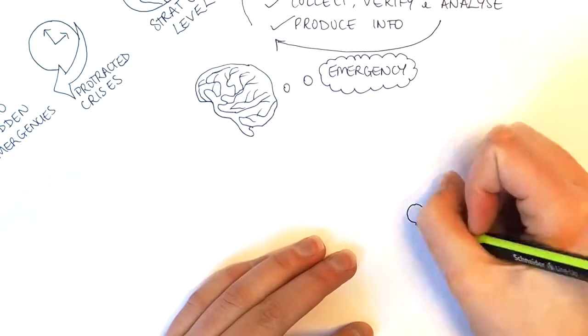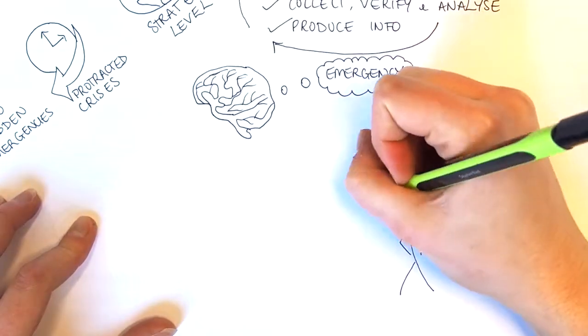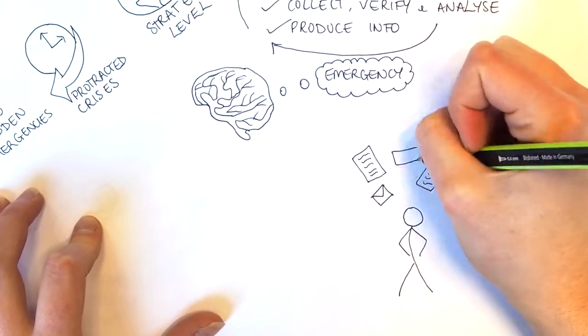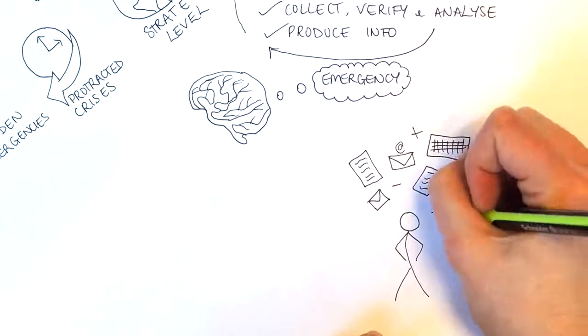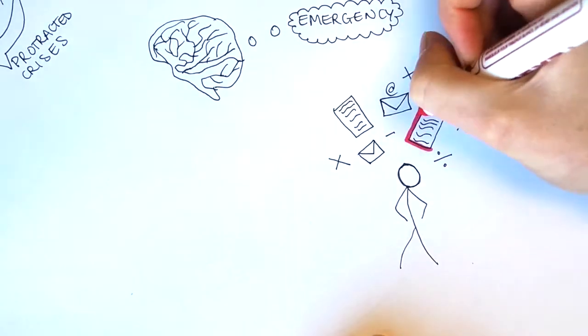What does an IM officer do? IM officers are presented with huge amounts of information coming from different operating environments, different sources and organizations. They then need to filter and consolidate this information.